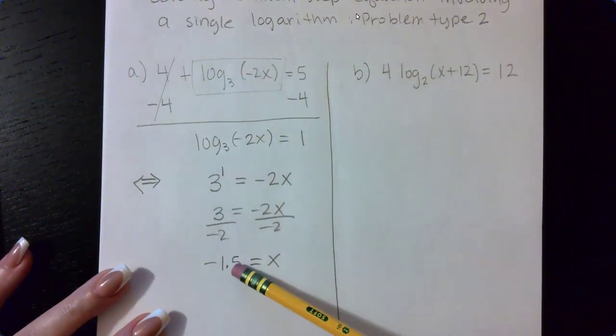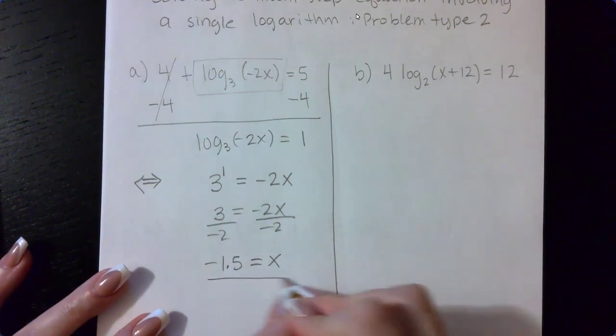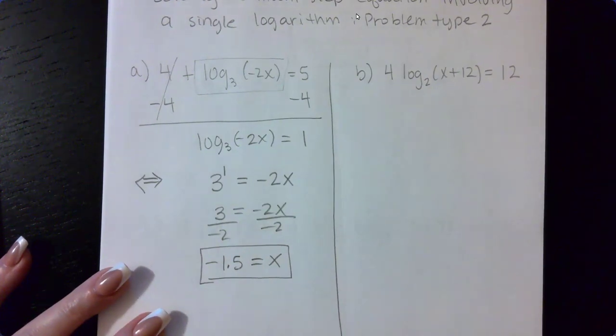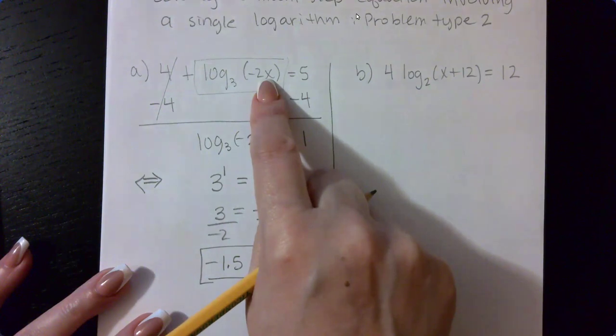this value will check out in that argument. So this is the valid, correct answer. But you always want to double check that whatever answers you get, if the x was in the argument, you want to make sure that that argument is positive.